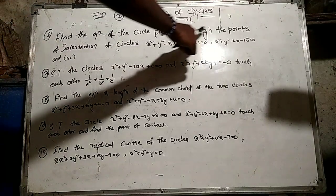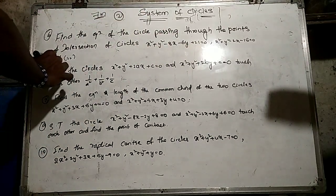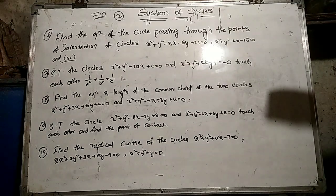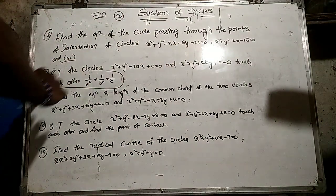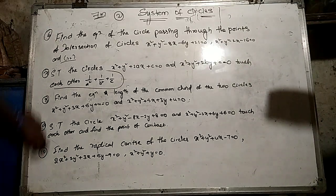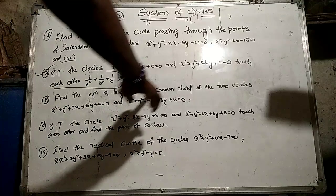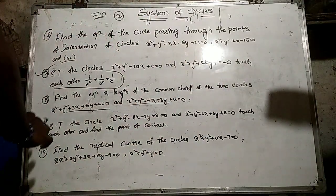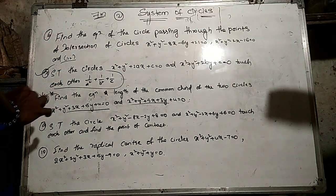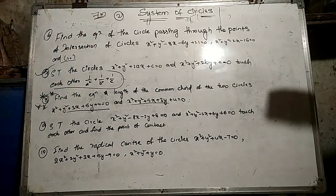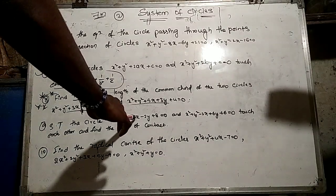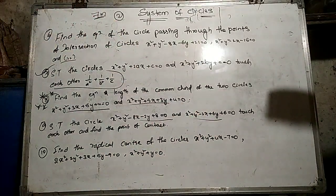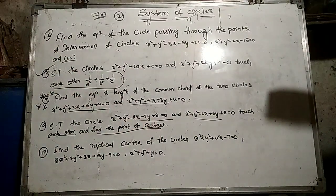Other important seven-mark questions: find the equation of the circle passing through the point of intersection of two circles and a given point. Show that two circles with the given equations touch each other — involving one over a squared plus one over b squared plus one over c. Find the equation and the length of the common chord of two circles — this is a five-star important question. Practice these from the textbook.